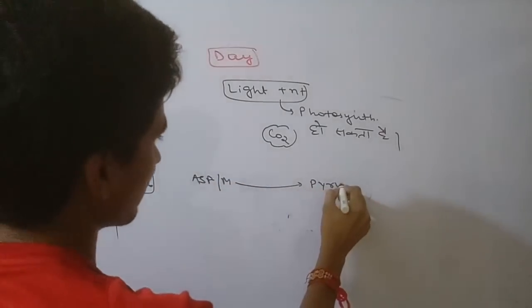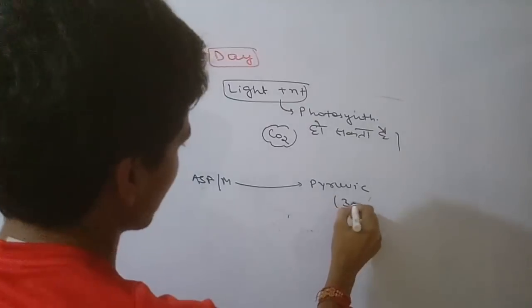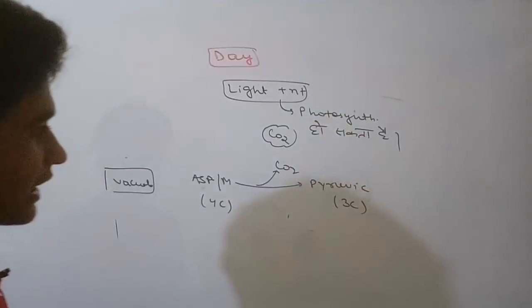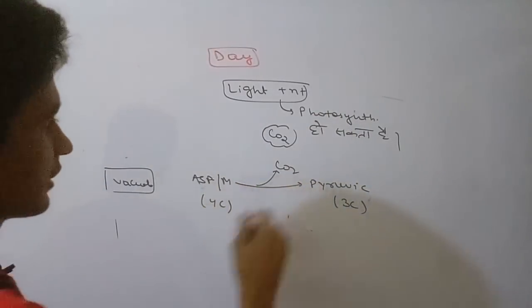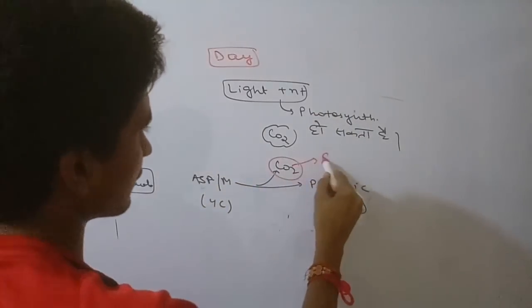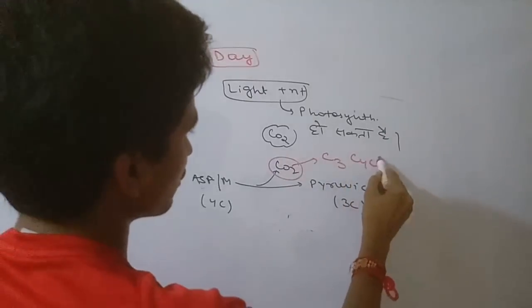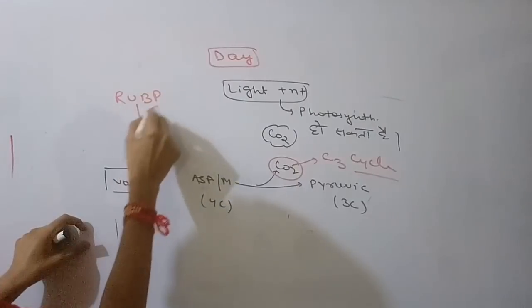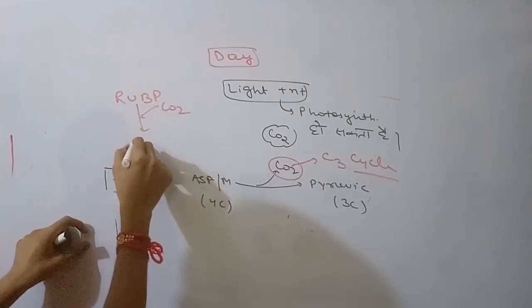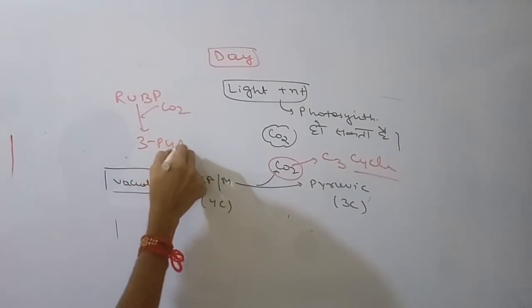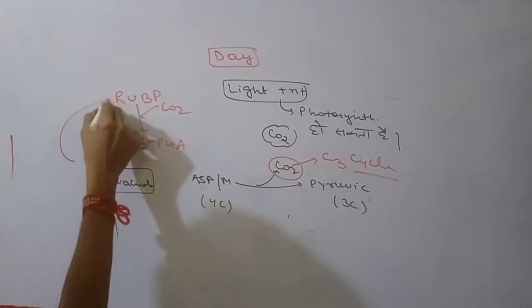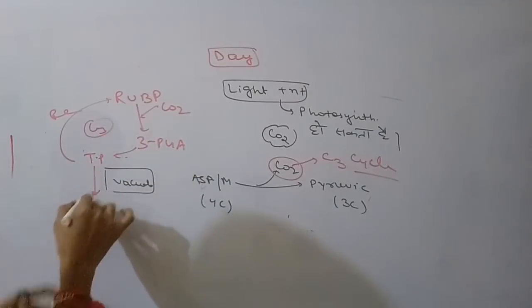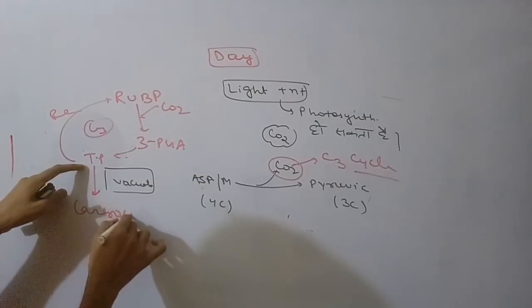Malic acid will be converted to pyruvic acid, which is a three carbon compound, and CO2 is released. This CO2 will be incorporated into Calvin cycle. This means RuBisCO and 3-PGA are formed. 3-PGA forms triose phosphate and regenerates the cycle.